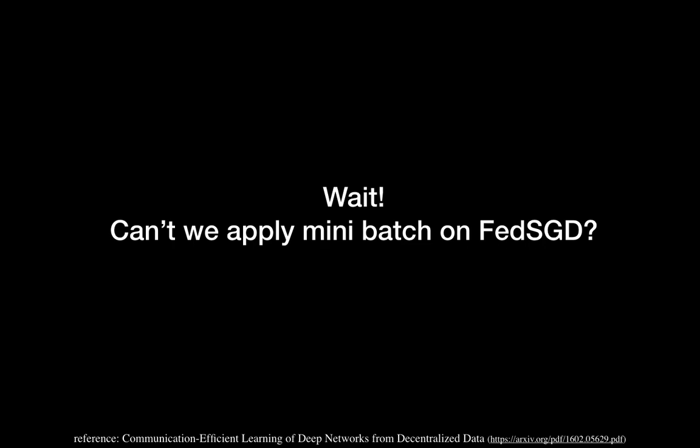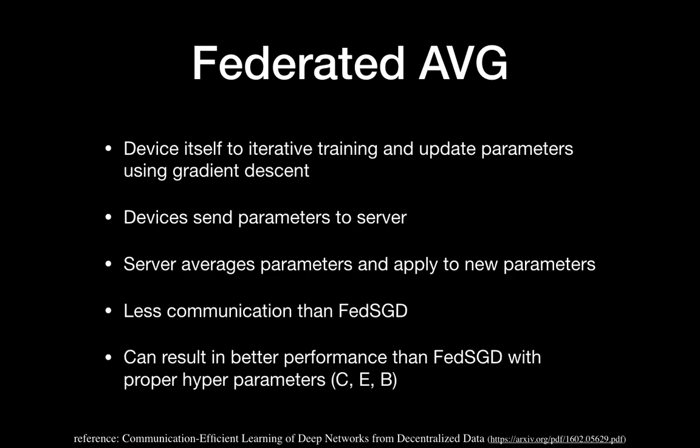Can we apply mini-batch on FedSGD? Yes we can — we can have an epoch count and a batch size, which is the basis of mini-batch. And this is essentially the basis of Federated AVG: the device itself does iterative training and updates parameters using gradient descent, then sends the parameters to the server. The server averages the parameters and applies them to the new parameter. It turns out that Federated AVG has less communication than Federated SGD, just as mini-batch compares to stochastic gradient descent.